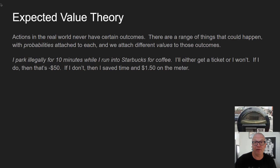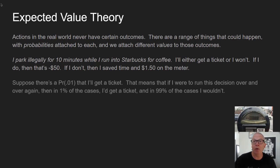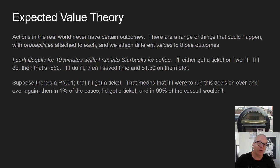If I do get a ticket, let's say that's a $50 fine. If I don't get a ticket, I saved a bit of time, whereas in the other case where I paid the meter, I paid $1.50. Suppose there's a 1% probability I'll get a ticket — meaning if I ran this decision over and over, in 1% of cases I'd get a ticket and in 99% I wouldn't. When we think about the big picture and imagine turning this single decision into a policy, what would that cost or benefit me over many instances?